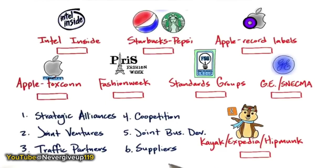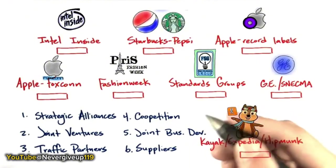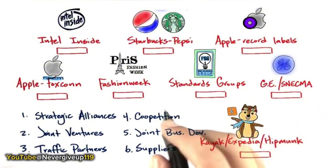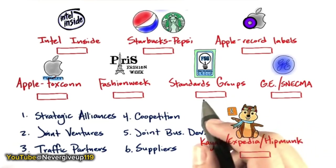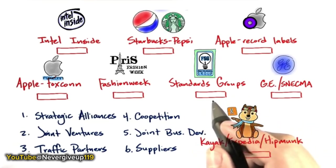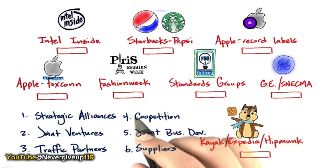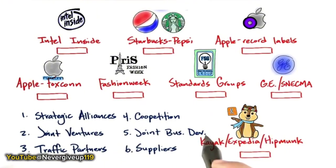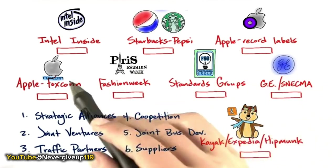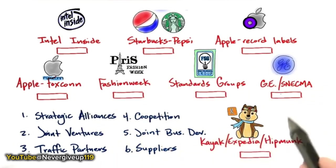Let's look at the types of partners and suppliers that are available. None of these come with a memo saying they look exactly like these — some might blur the lines. Let's see if we can understand who fits under strategic alliances, joint ventures, traffic partners, co-opetition, joint business development, and suppliers. Match the type of relationship with each of these partnership examples.